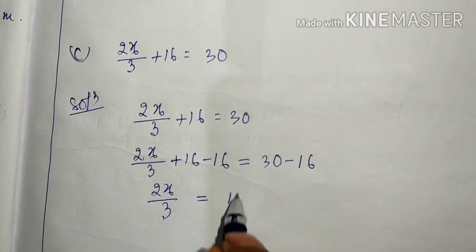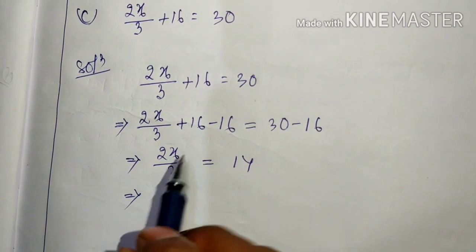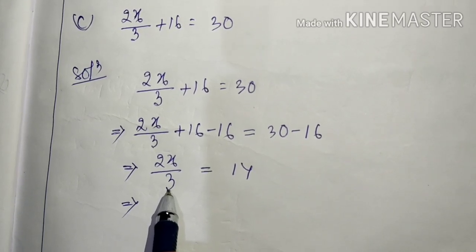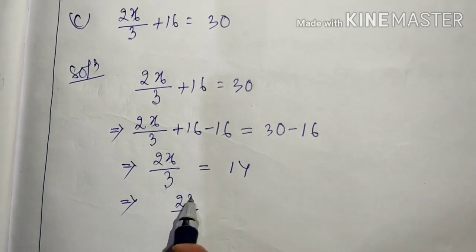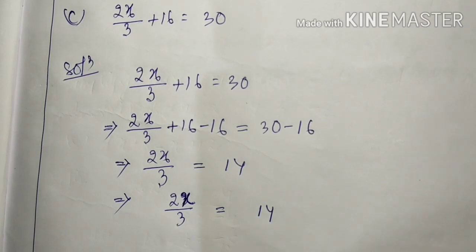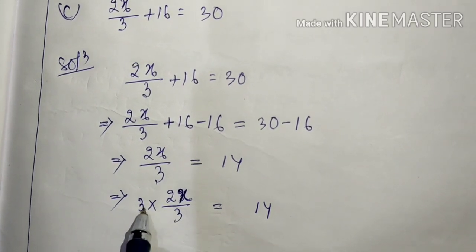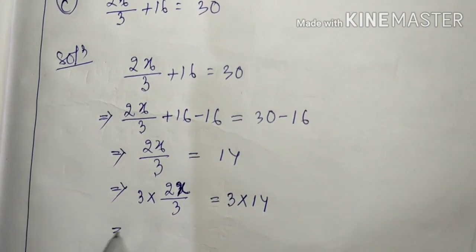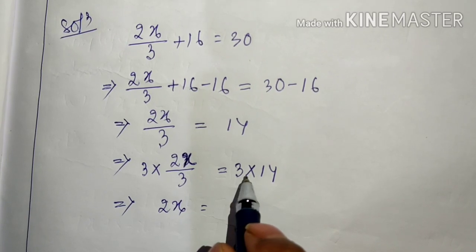30 minus 16 is 14. Now we have 2x/3 = 14. We need to remove the 3 in the denominator. Multiply both sides by 3 so it cancels. This gives 2x = 14 into 3, which is 42. Let's verify: 14 times 3 — 3 fours are 12, carry 1, 3 ones and 1 is 4 — so 42.